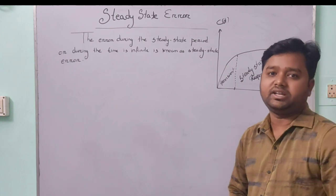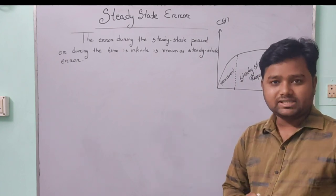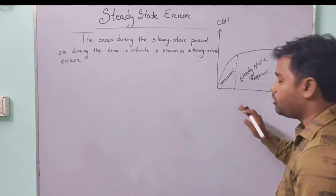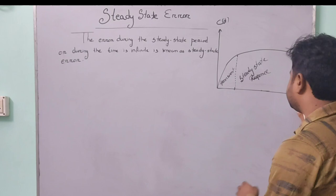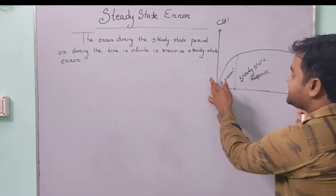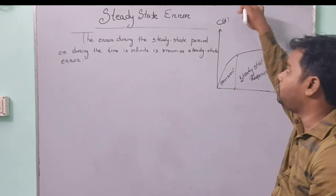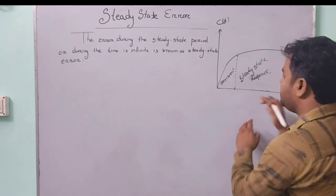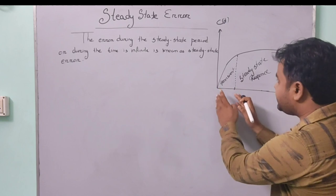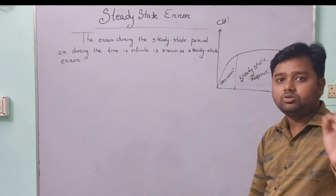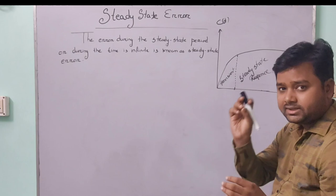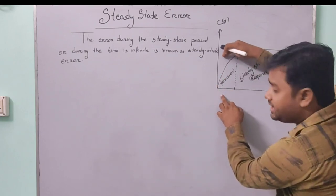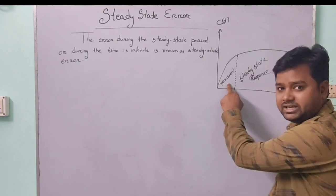Before going to steady state error, we will study the output response of a signal with respect to time. We have already studied about this graph. In this graph, the x-axis represents time and the y-axis represents c(t), the output response with respect to time. The graph between these two is plotted here. The first part is our transient part — when time t equals 0, for a certain increase in time, the output changes very rapidly. That is my transient response.